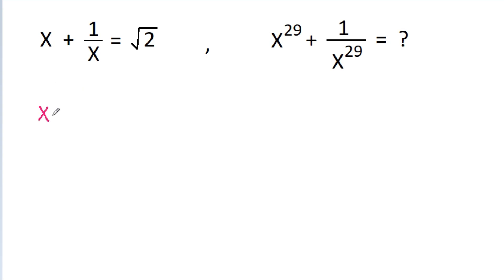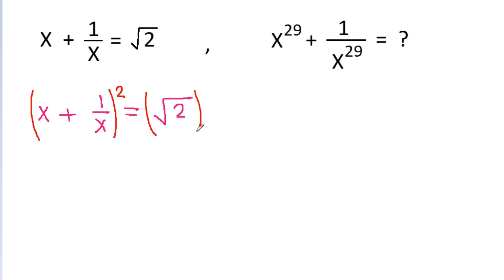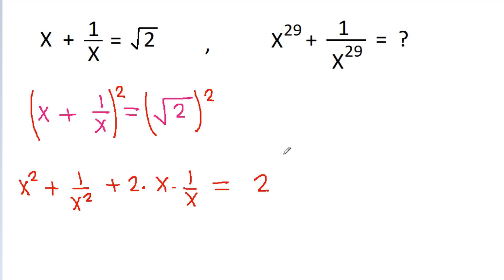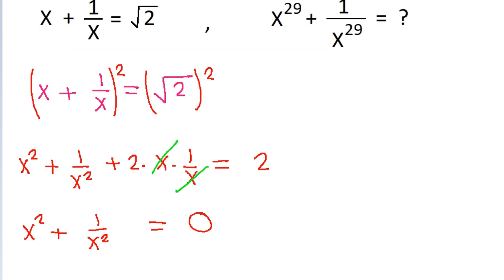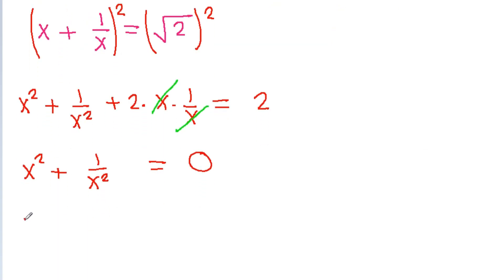We have given that x plus 1 by x is equal to square root of 2. Now if we square both sides, we get x square plus 1 by x square plus 2 into x into 1 by x is equal to 2. The x and 1 by x cancel, and we get x square plus 1 by x square is equal to 2 minus 2, which is 0.